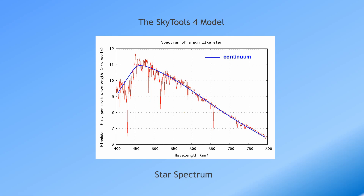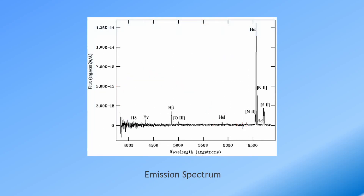Each type of object has its own unique energy distribution — a galaxy or comet will look different. This is an emission line spectrum for a planetary nebula. In this case, all of the light is emitted in narrow emission lines. You can see the H-alpha, O3, and S2 lines. We can isolate these lines with narrowband filters.